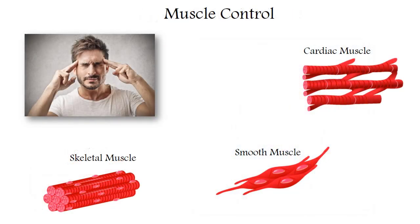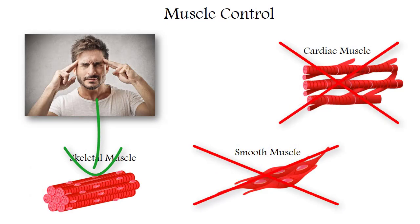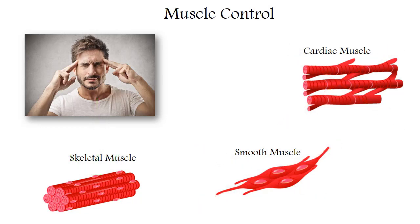A person can control only skeletal muscles, while the cardiac and smooth muscles are involuntary, that is they are not controlled by our consciousness. For example, we cannot simply make our own heart beat 60 beats per minute if we wish, or keep the blood pressure at 120 over 80. We can only indirectly through skeletal muscles change the work of the heart, blood vessels and other organs.